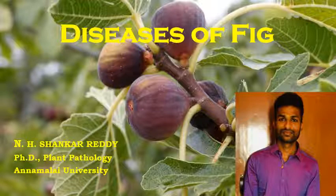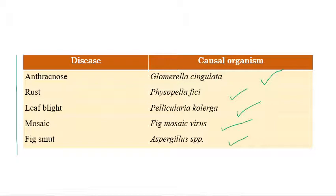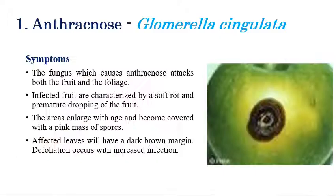Diseases of fig. My name is Annit Shankar Reddy and I am doing a PhD in plant pathology at Annamalai University. These are the list of important diseases in fig: the first one is anthracnose, which is caused by Glomerella cingulata; rust, caused by Phakopsora fici; leaf blight, caused by Pellicularia koleroga; mosaic, caused by fig mosaic virus; and fig smut, which is caused by Aspergillus species.